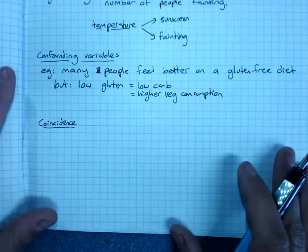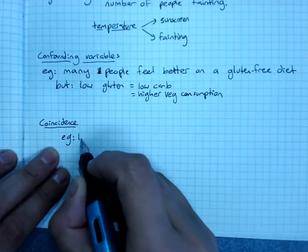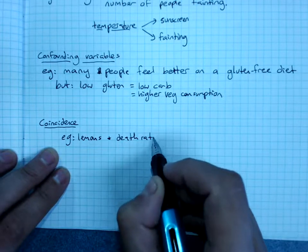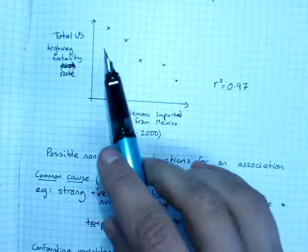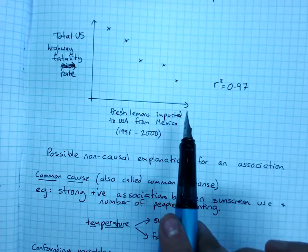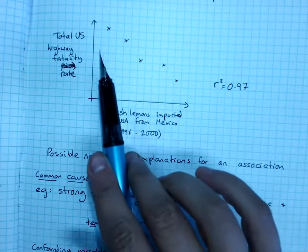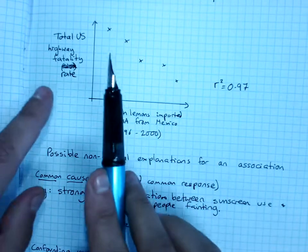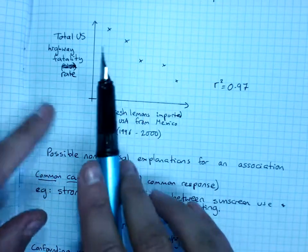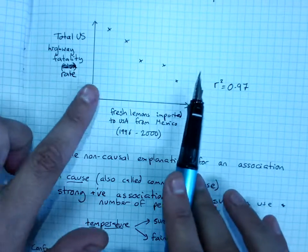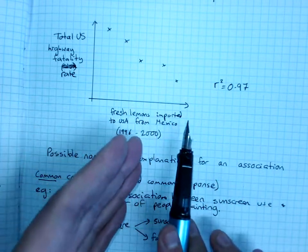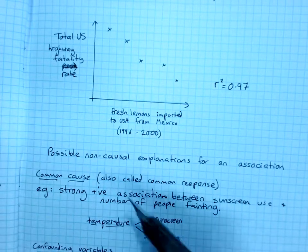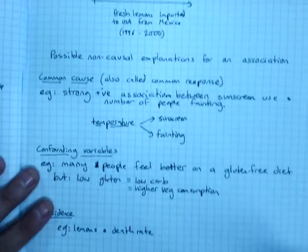And it could just be coincidence, as in my lemons example. It's very unlikely that as our lemon imports increase, our roads become safer because of that. But it's quite likely that over time our roads become safer and our cars become safer, and so the fatality rate drops. And also over time, we like eating more lemons, and so the lemon imports increase. And it just so happens that they both happened over time.